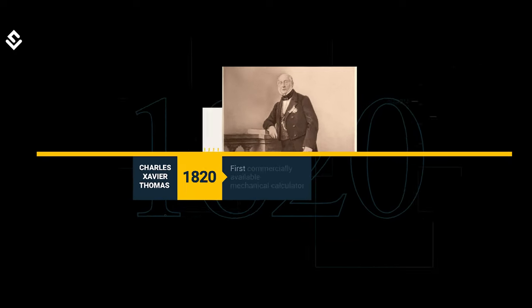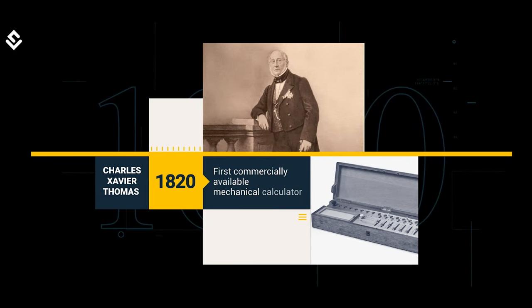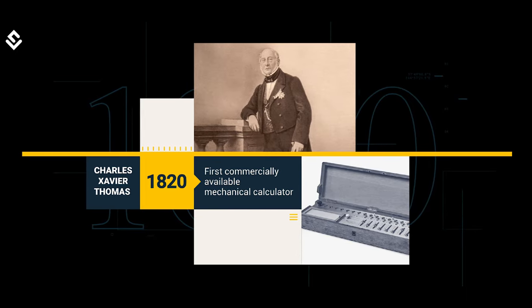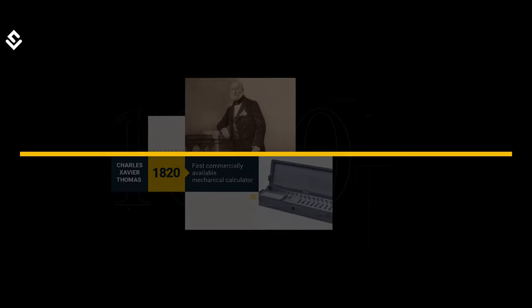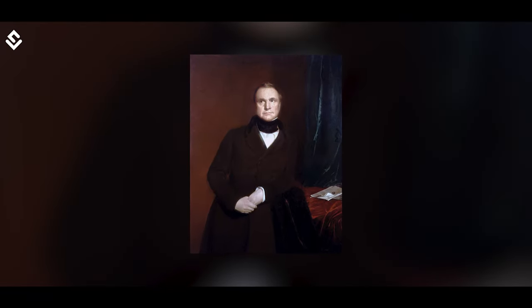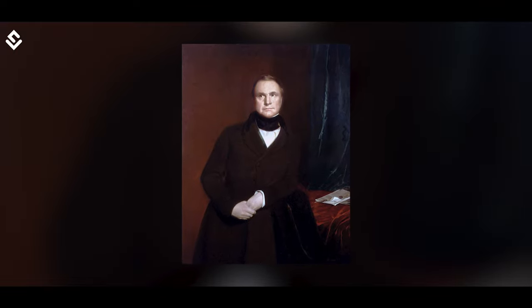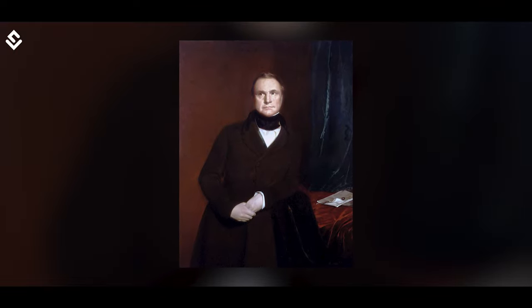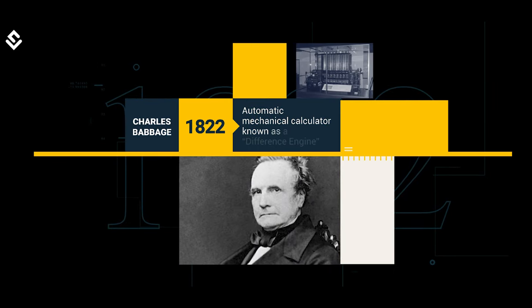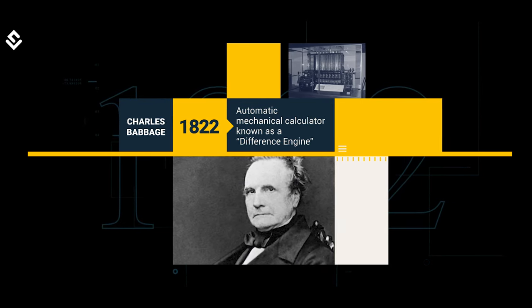Finally, in 1820, Charles Xavier Thomas produced the first commercially available mechanical calculator. It was Charles Babbage who developed the first modern equivalent of a computer system in Cambridge, England. He built an automatic mechanical calculator known as a difference engine in 1822.